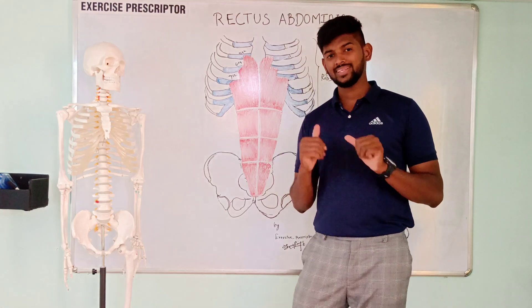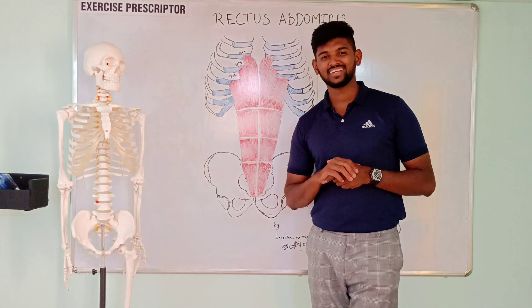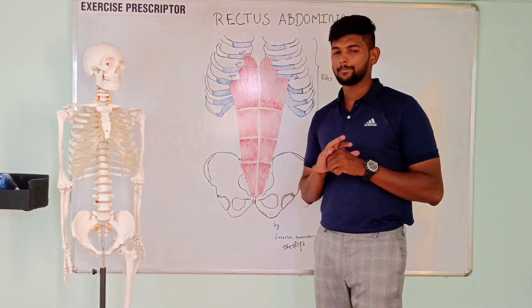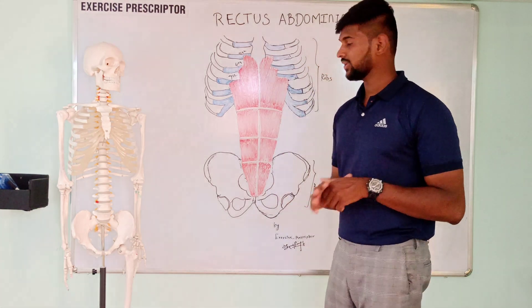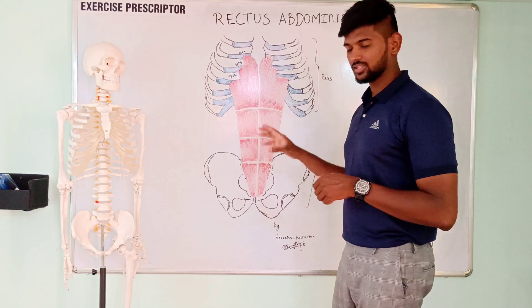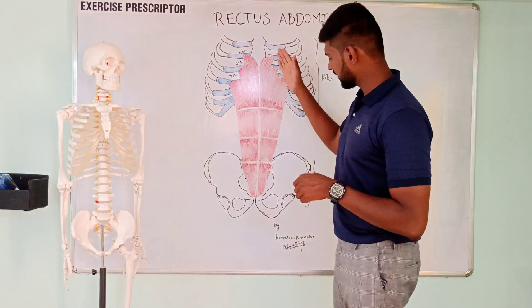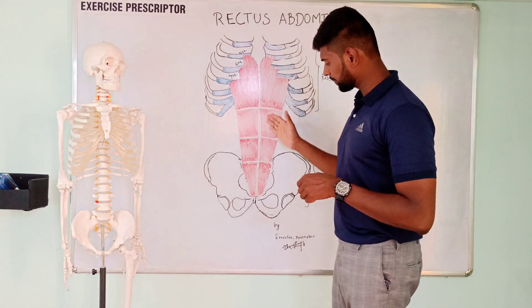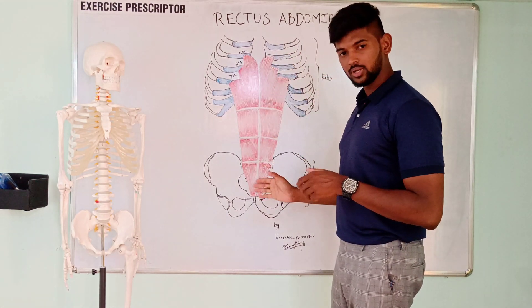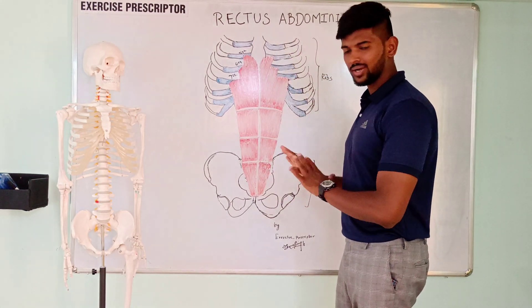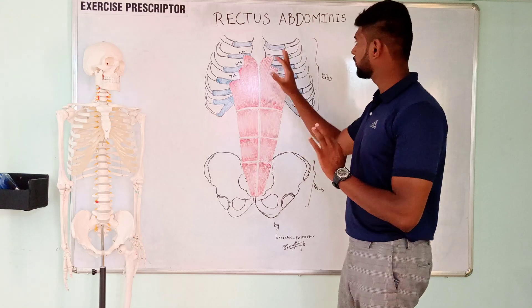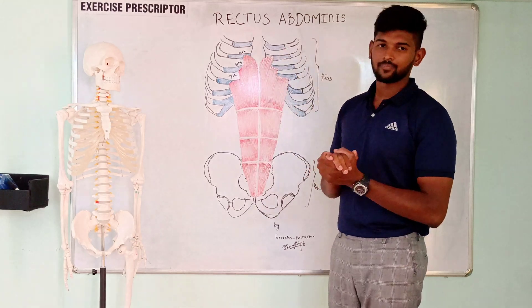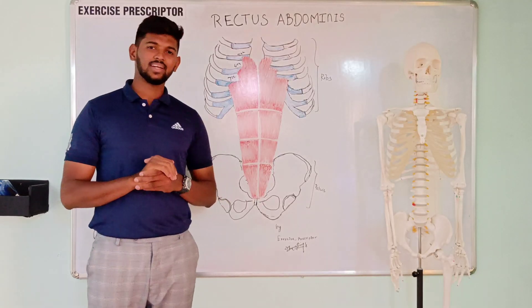Why is this muscle called rectus abdominis? Rectus means straight. This muscle runs straight up the abdomen, so this is called rectus abdominis. Next, we will see the attachment.